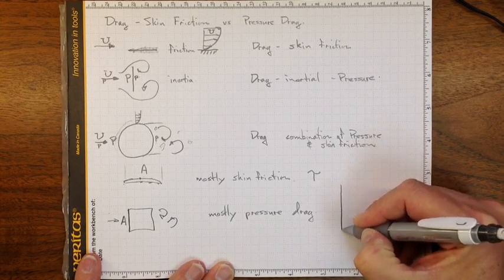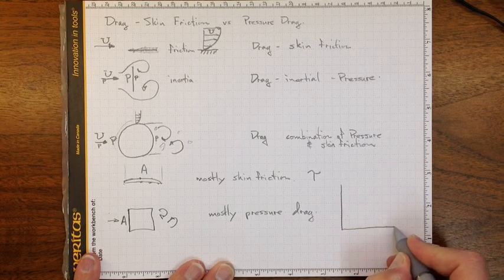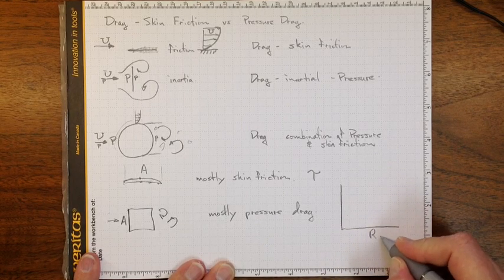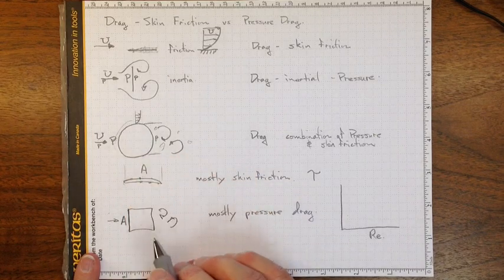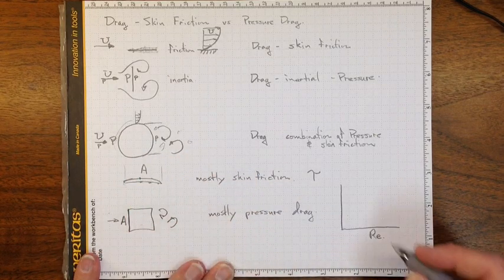And if we look at a graph of drag coefficient versus Reynolds number, whether it's for a sphere or a cube, or any other bluff body,